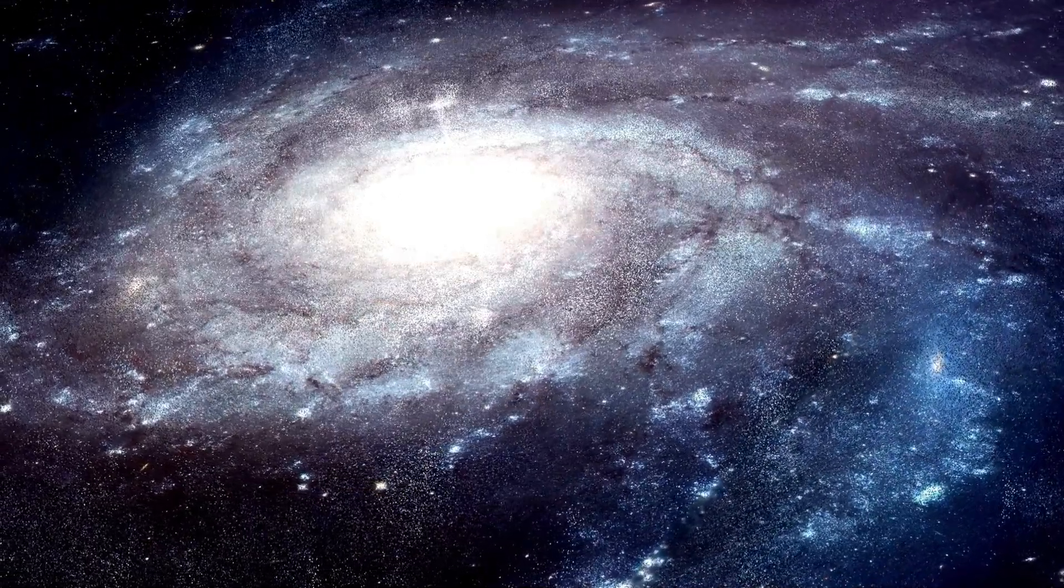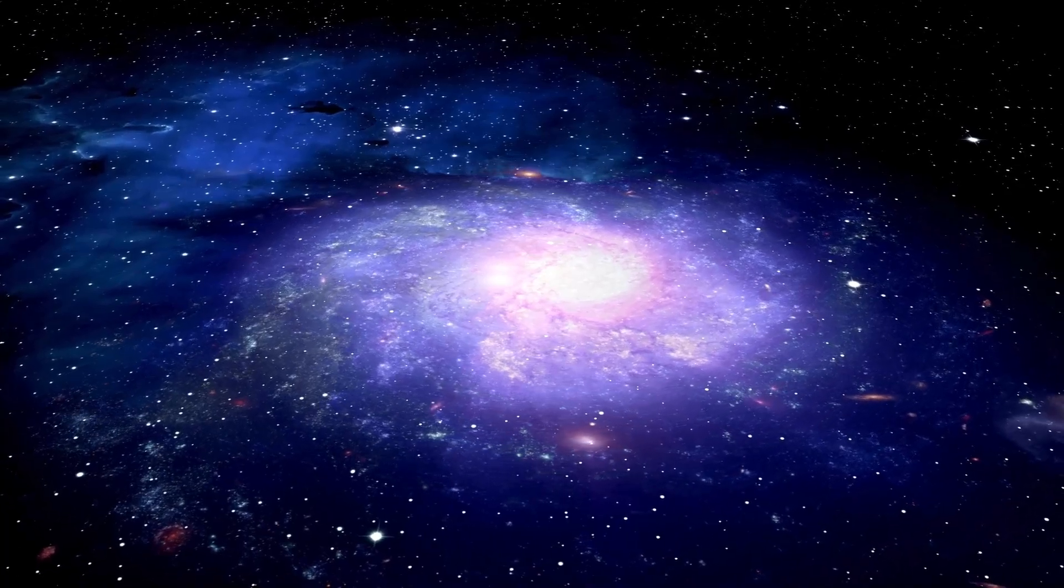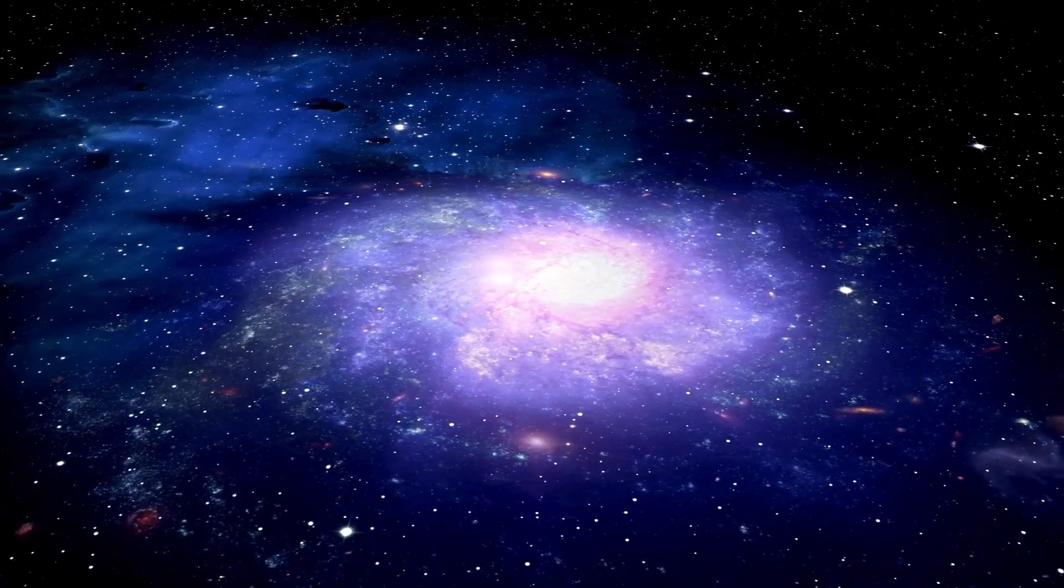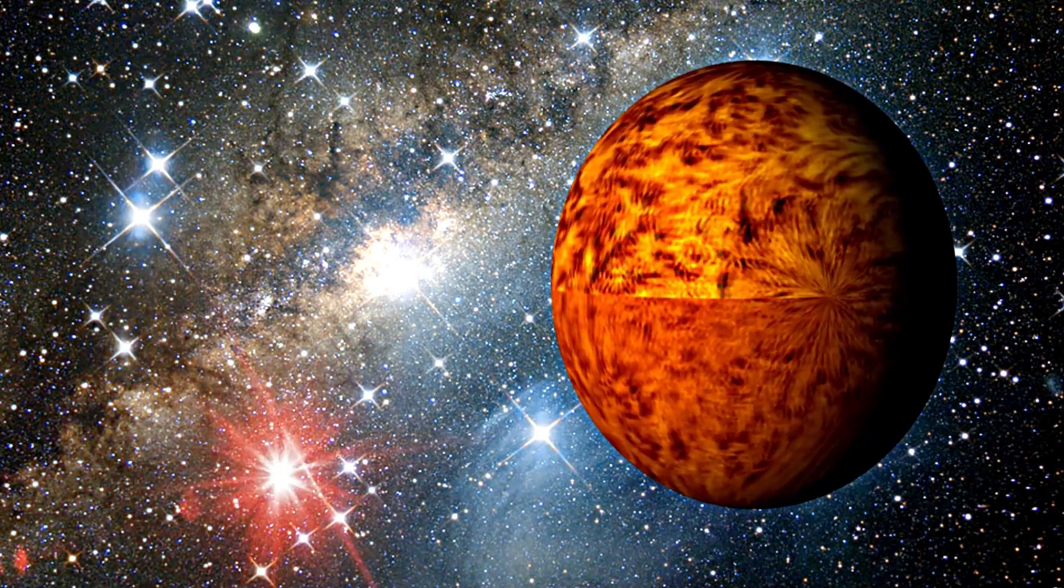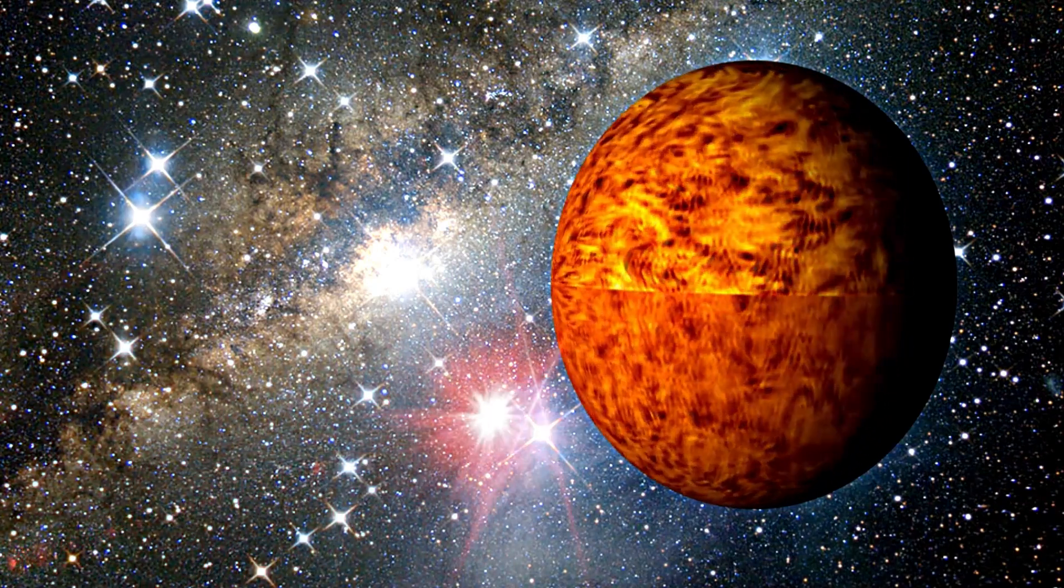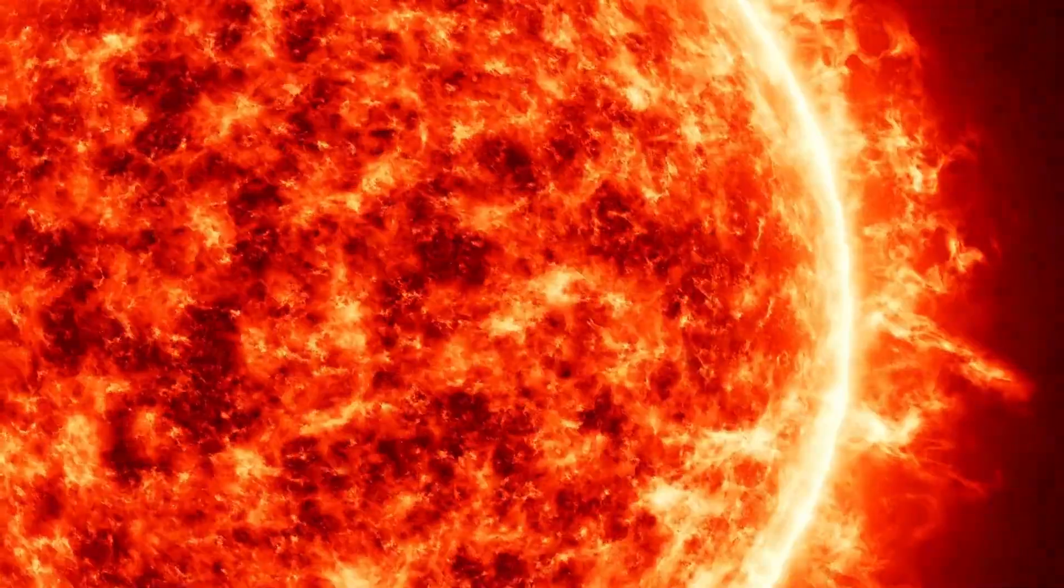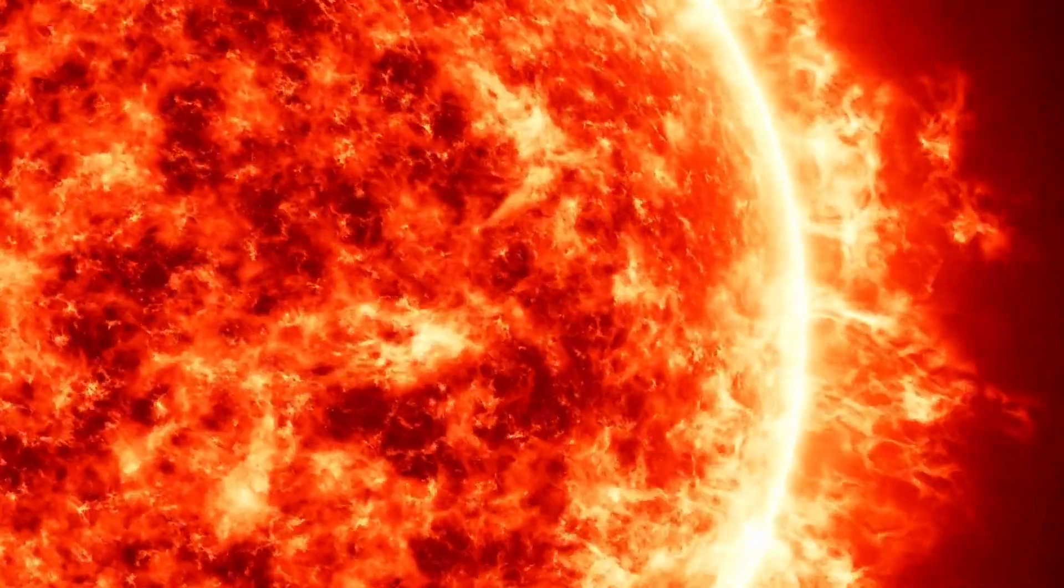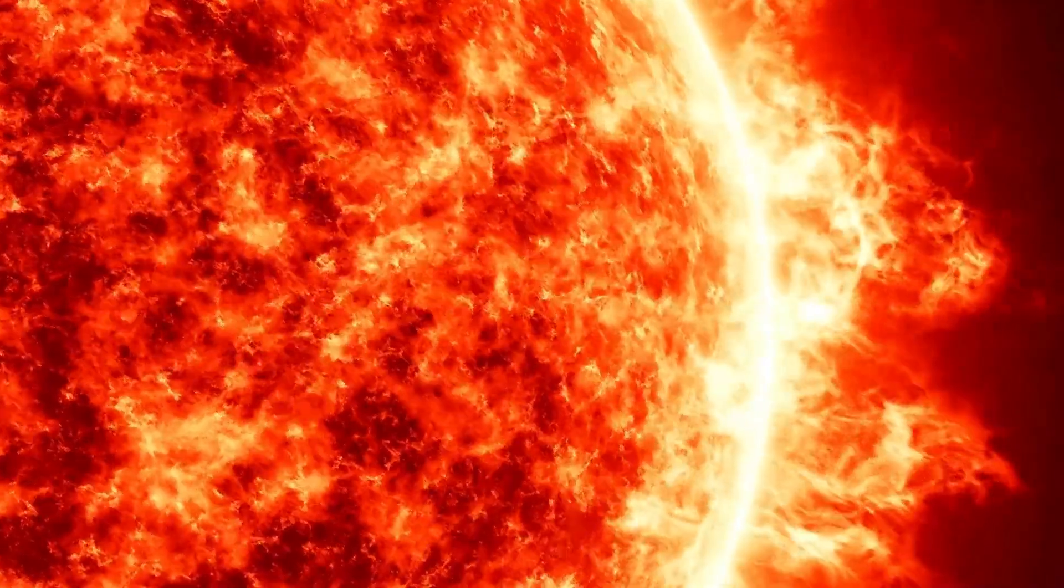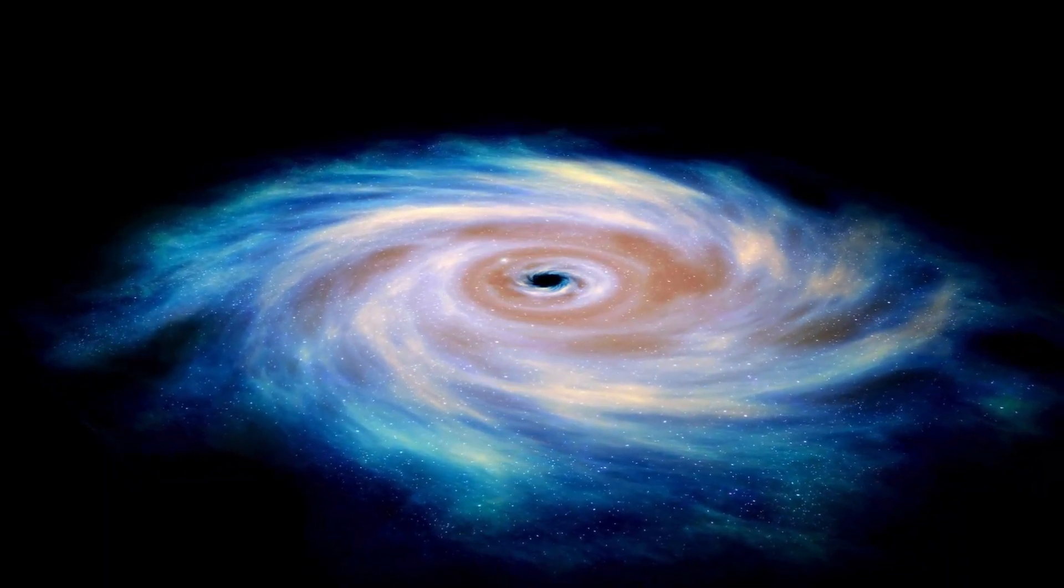Betelgeuse, an enormous red giant star and one of the nearest stars to Earth, has recently gone through a noteworthy dimming that has caught attention and stirred mixed feelings around the world. This dimming has led to hypotheses among cosmologists and the public about its potential ramifications. Some researchers believe this surprising behavior could be a precursor to a cosmic explosion, a catastrophic event that happens when a star depletes its atomic fuel and collapses under its own weight, leading to a massive blast.